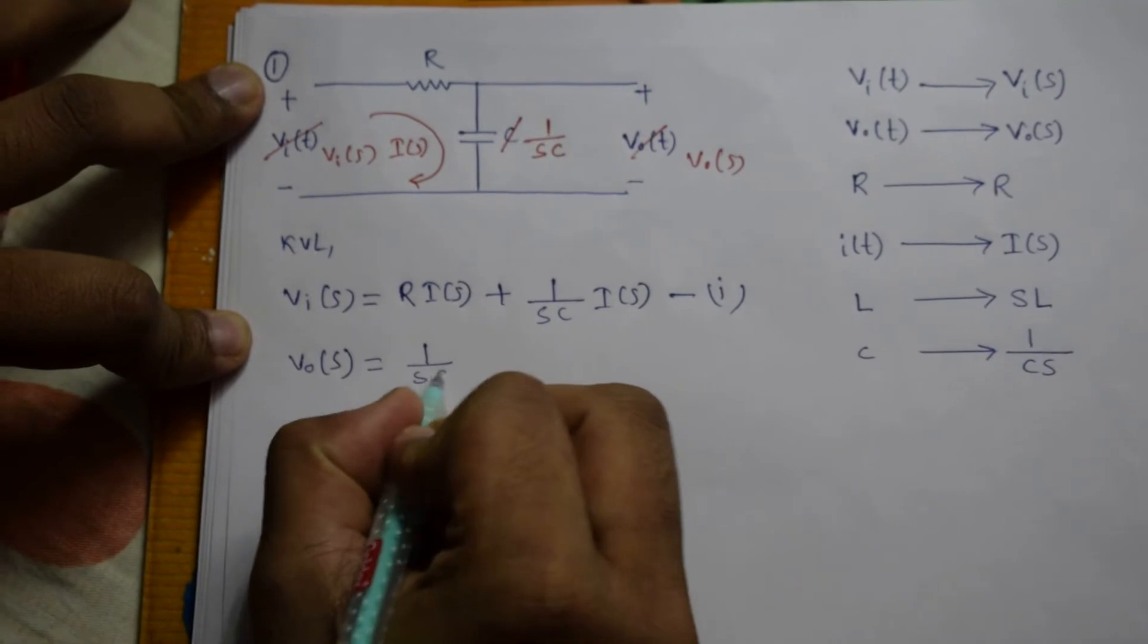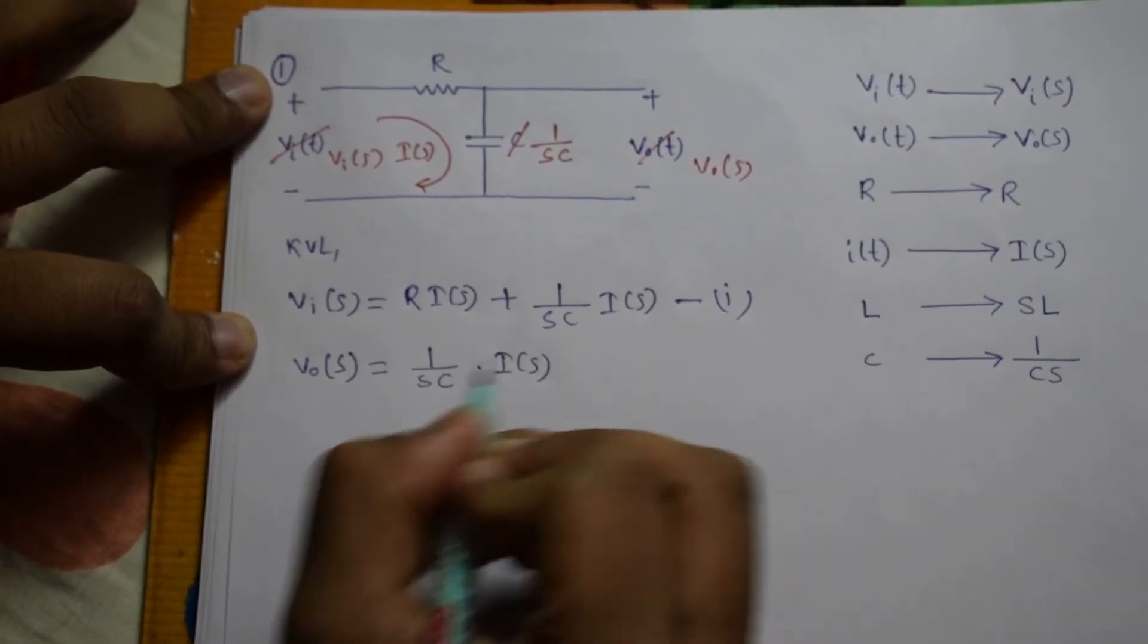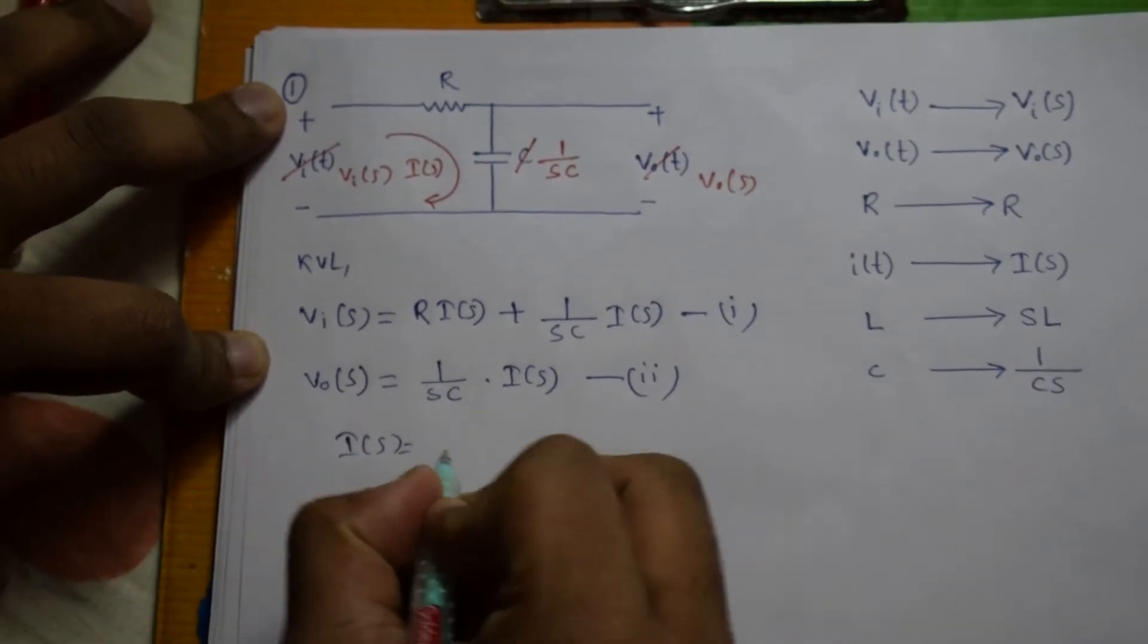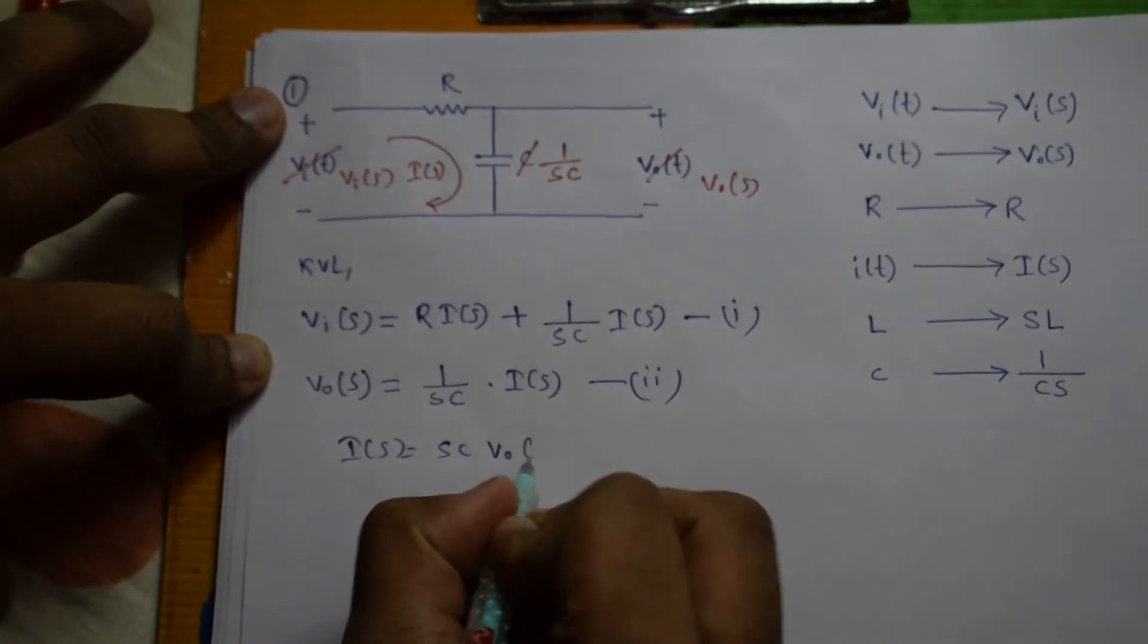The second equation will be Vo(S) equals to 1 by SC into I(S). So I(S) from here is SC into Vo(S).